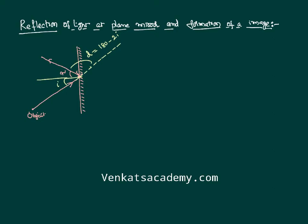Now I would like to know how an image is formed for this object. To identify the image, one light ray is not enough — we shall draw one more light ray. Let us draw one more light ray like this. This is the first light ray and this is the second light ray.